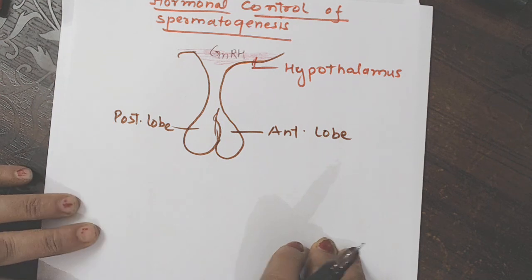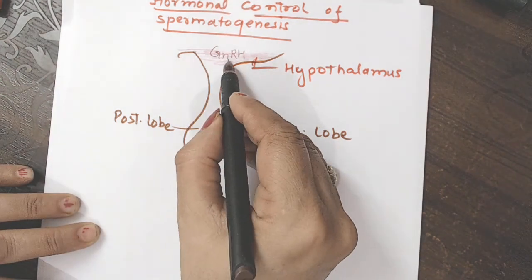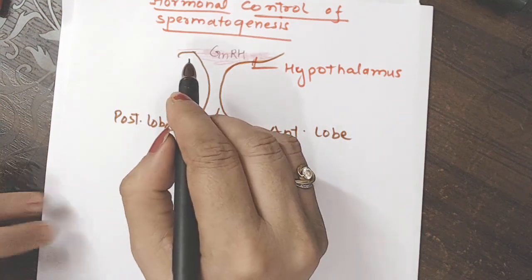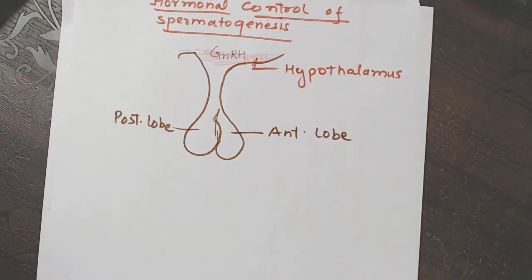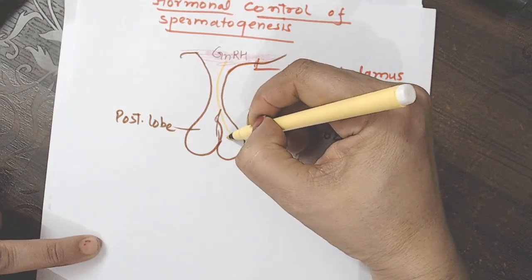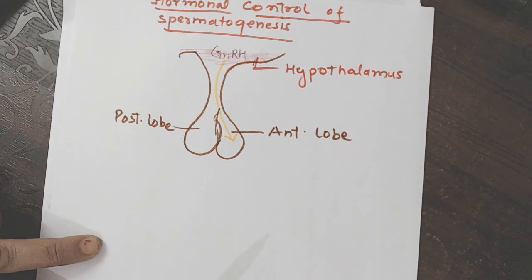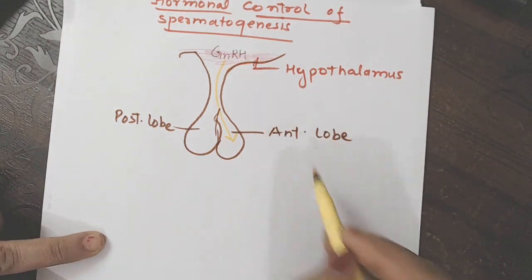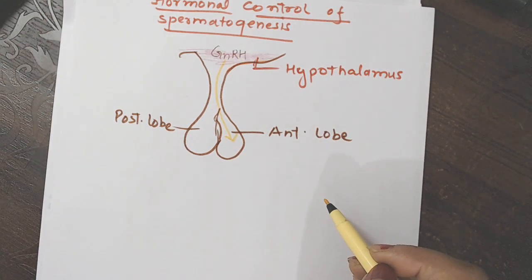This portion is hypothalamus. So from this hypothalamus releases a hormone known as GNRH. H means hormone. GNRH that is gonadotropin-releasing hormone. It will release this hormone to the anterior lobe of pituitary.